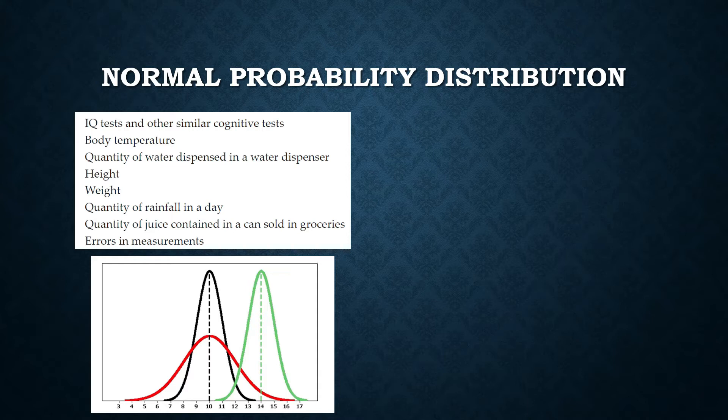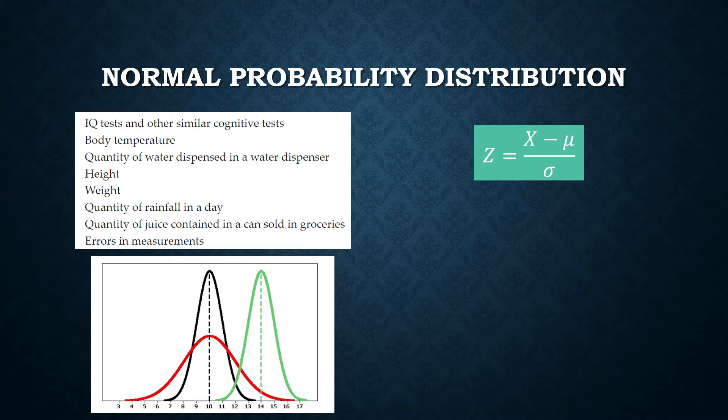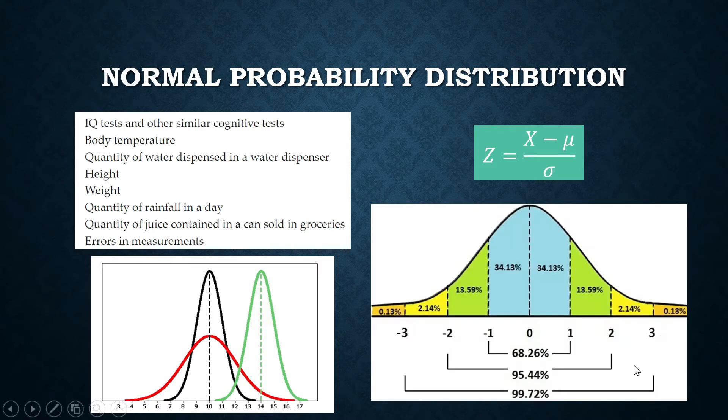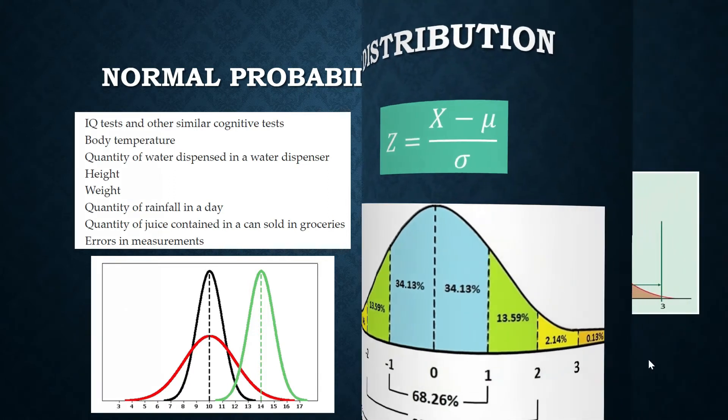Now, we can produce one normal curve for all of our normal probability distributions. And we call it the standard normal curve. And we do it through this transformation: Z equals x minus the mean over the standard deviation. This is not the first time you are seeing this. We saw this in the topic measure of relative position. And so using this, we shall now produce a new curve called the standard normal curve.